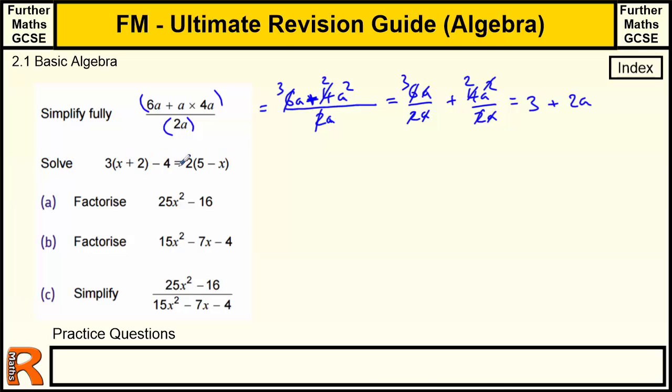Solving this equation. So, multiplying out brackets, we get 3X plus 6. Not forgetting to multiply the second one. Take away 4 equals 2 lots of 5, which is 10, minus 2 lots of X. So, we've got 3X plus 2 equals 10, minus 2X. Take the Xs over to this side by adding 2X to get 5X plus 2 equals 10. Take away the 2 to get 5X equals 8. Divide by the 5 to get X equals 8 over 5.